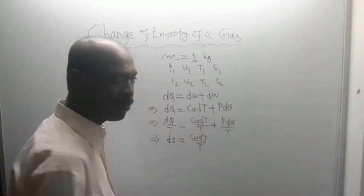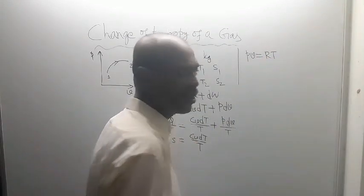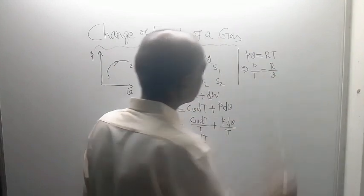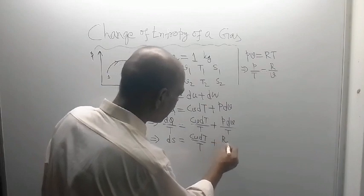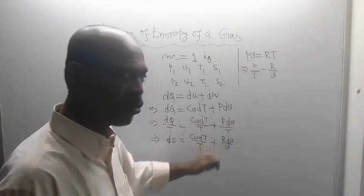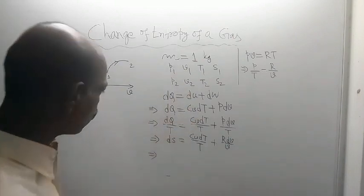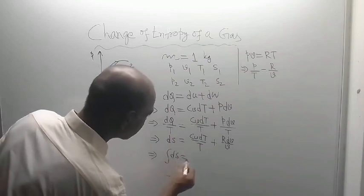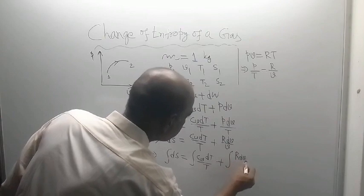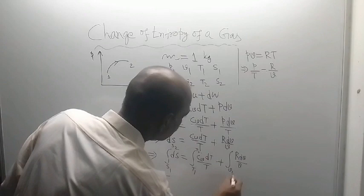Since we have taken only 1 kg of gas, we can easily write PV = RT, which is called the equation of state. Therefore P/T = R/V. So here P/T will be replaced by R/V. Integration is now possible because we have V and DV, and R and Cv are constants. For definite integration from state 1 to state 2: the left side integrates S1 to S2, the first term integrates T1 to T2, and the second term integrates V1 to V2.